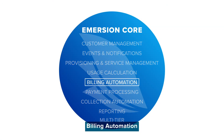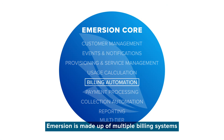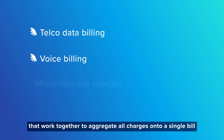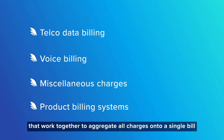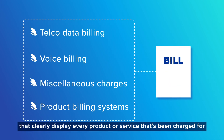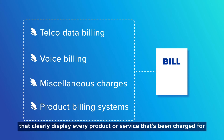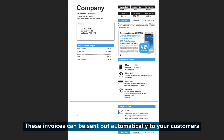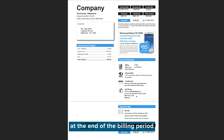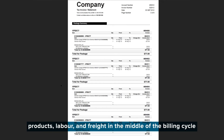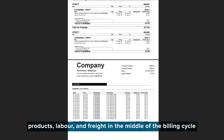Billing automation: Immersion is made up of multiple billing systems that work together to aggregate all charges onto a single bill. These bills are presented on customizable invoice templates that clearly display every product or service that's been charged for. These invoices can be sent out automatically to your customers at the end of the billing period. You can also send additional invoices for projects, products, labor, and freight in the middle of the billing cycle.